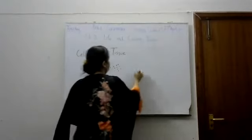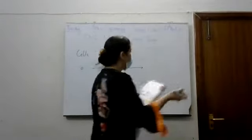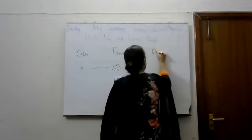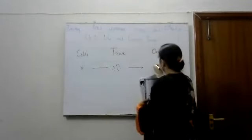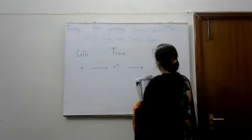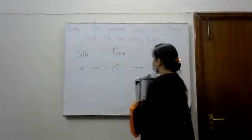When the tissues are joined, then it forms the organ. For example, the stomach. Stomach is an organ which is formed by the tissue.